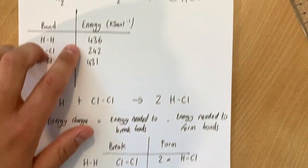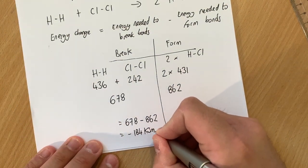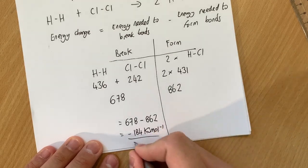And that will be the final answer to our problem which is minus 184. And our units, if you go all the way back to the table, are kilojoules per mole. So the final answer is minus 184 kilojoules per mole. And that's our final answer.